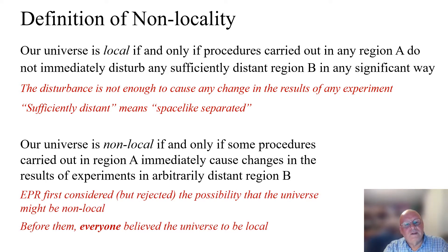Einstein, together with Podolsky and Rosen, first considered but rejected the possibility that the universe might be non-local. Before them, everyone believed the universe to be local. This is hardly surprising - suppose you were doing an experiment in region B, your results could be totally disrupted by goings-on in region A, and then many such regions A.